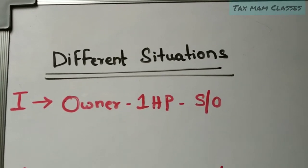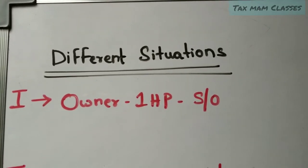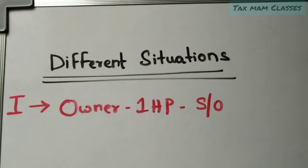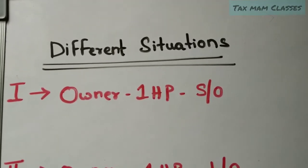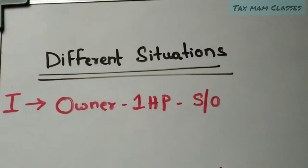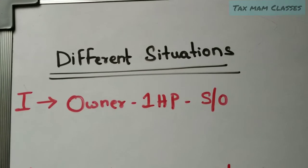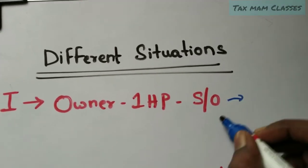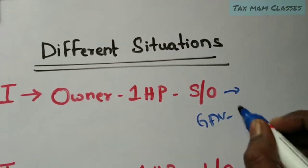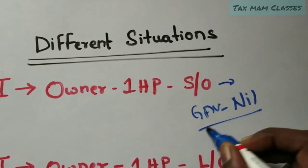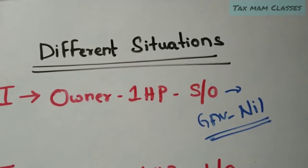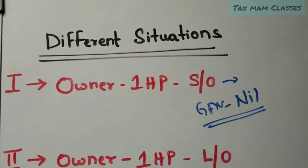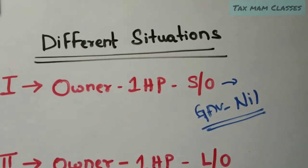Coming to the first situation: when the owner has one house property and it is self-occupied, what will be the GAV? The gross annual value will be nil. If the house property is self-occupied, then the gross annual value of that self-occupied property will be nil.